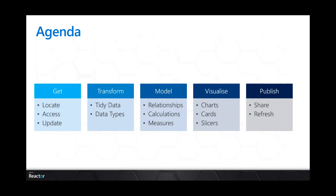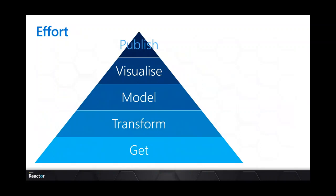You can do all of that up to the visualised stage without a pro licence — the pro licence only kicks in at the point at which you want to share it with people. And if you look at it in a slightly different way, getting the data will take you time. Transforming and modelling will take more time than the visualising and publishing. In today's session I can't help you getting your data — without being able to see what your data is and where it is, it's really difficult. So we're going to start with the transforming and modelling. You get those right, visualising and publishing is really easy.